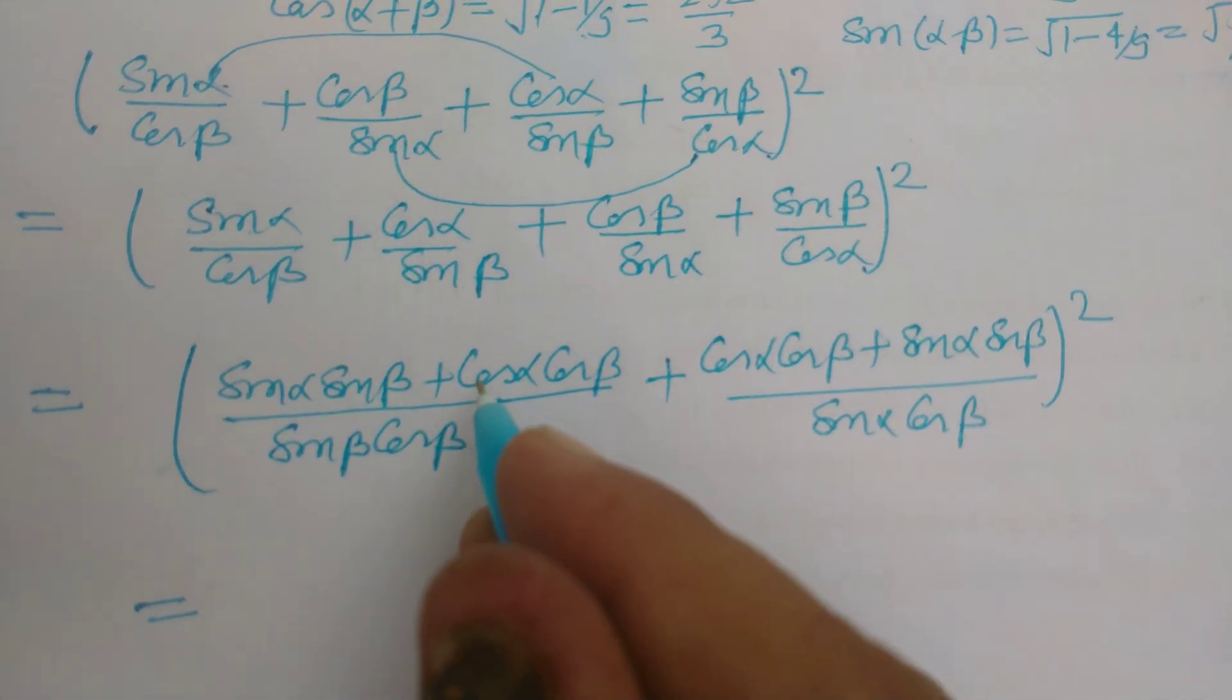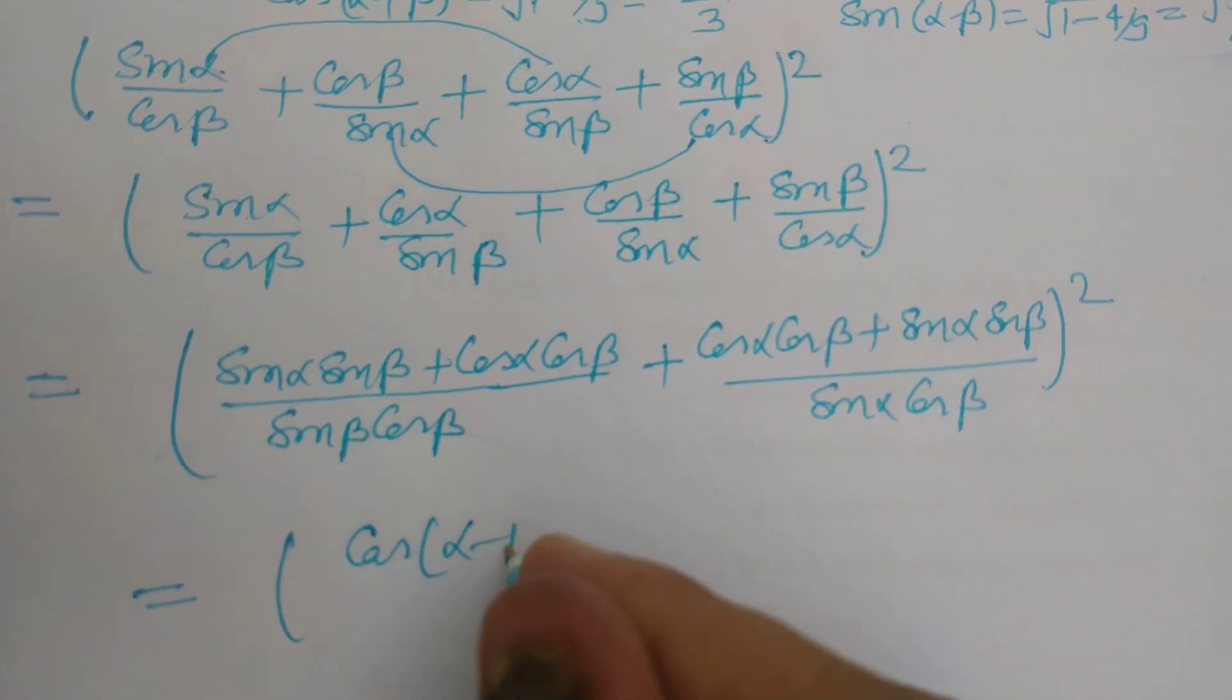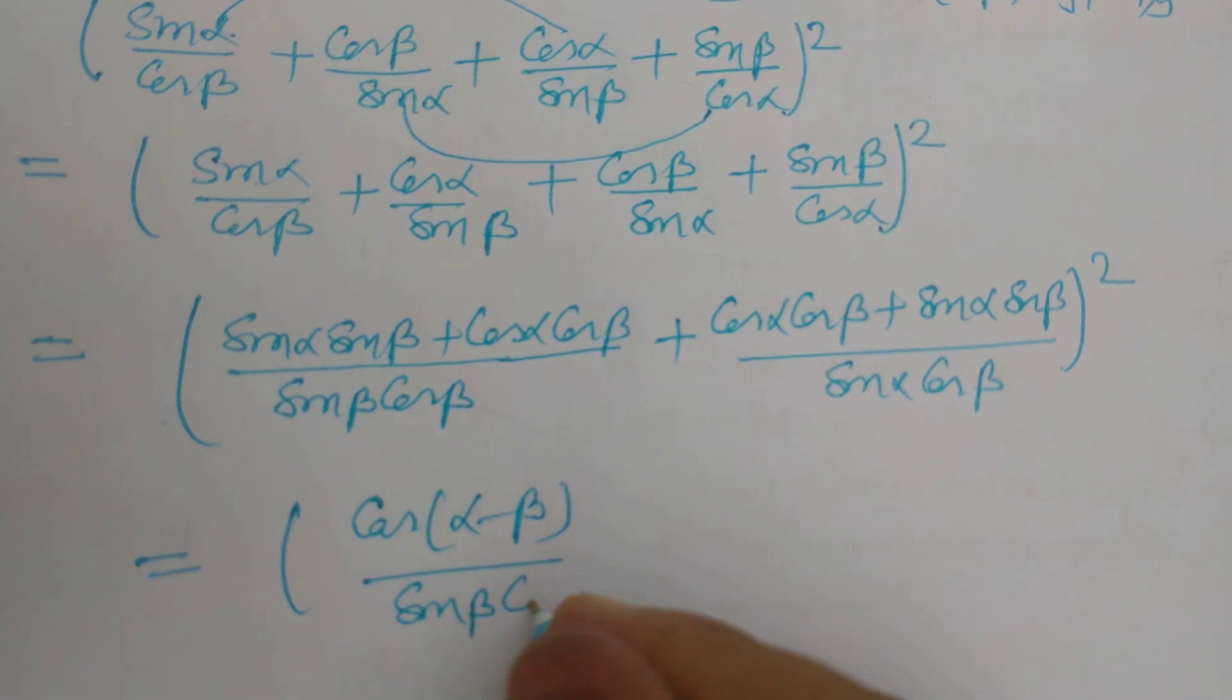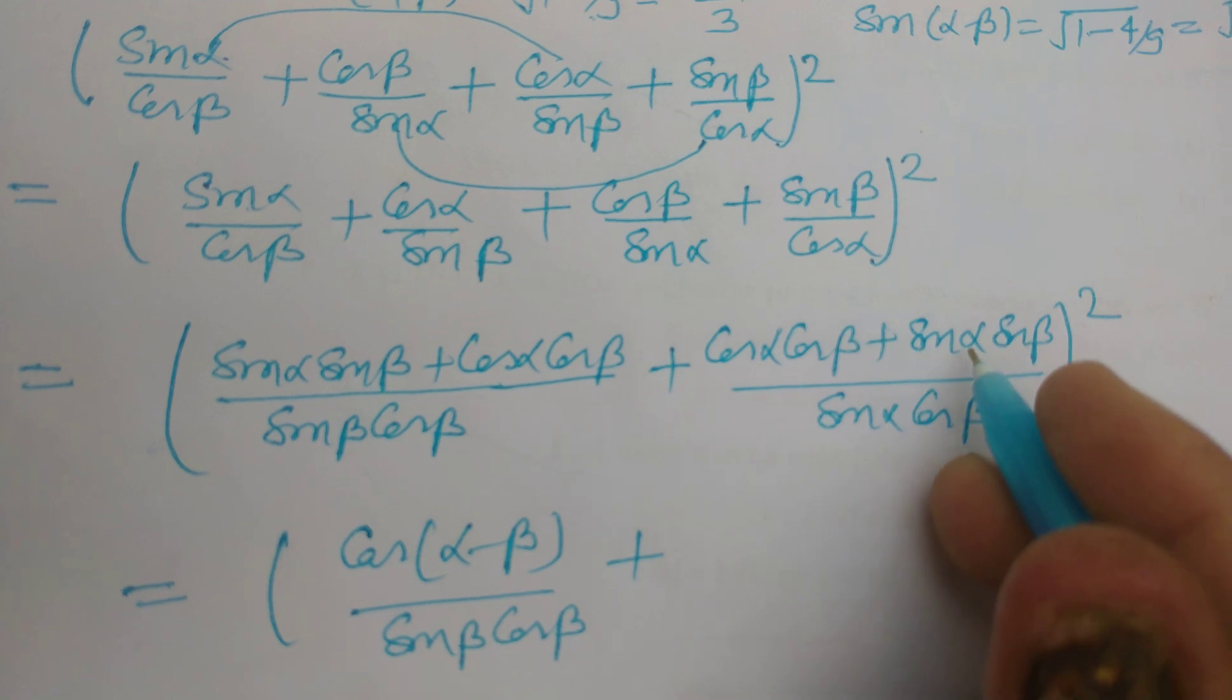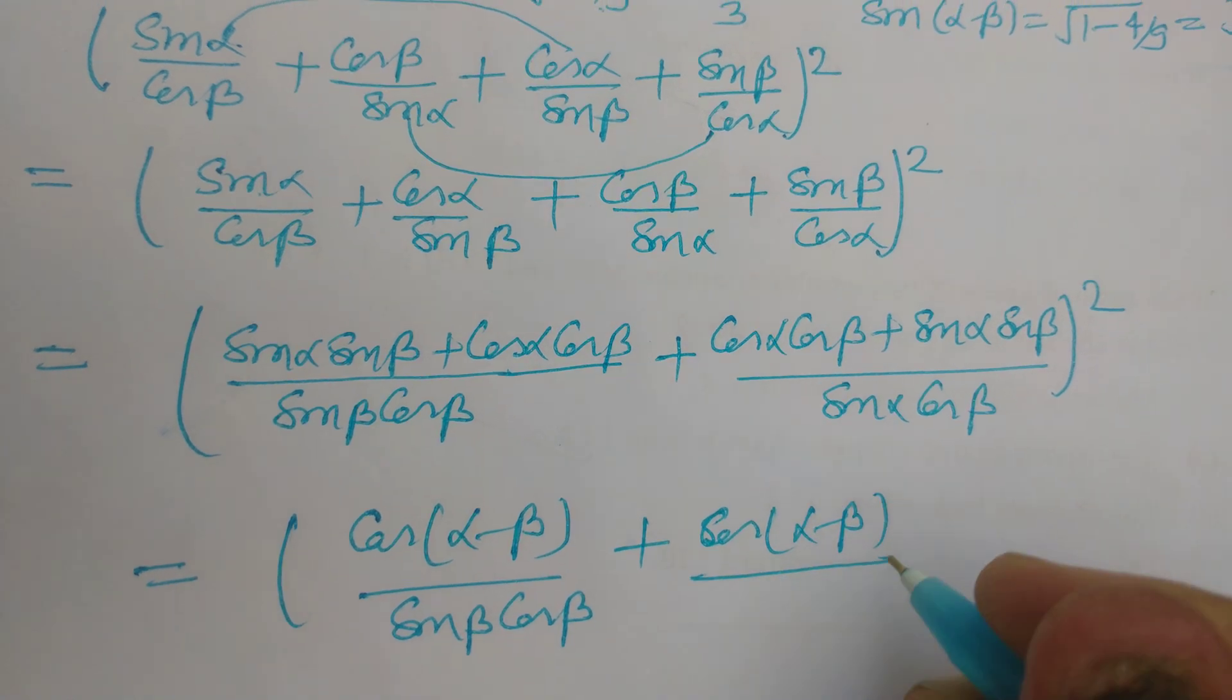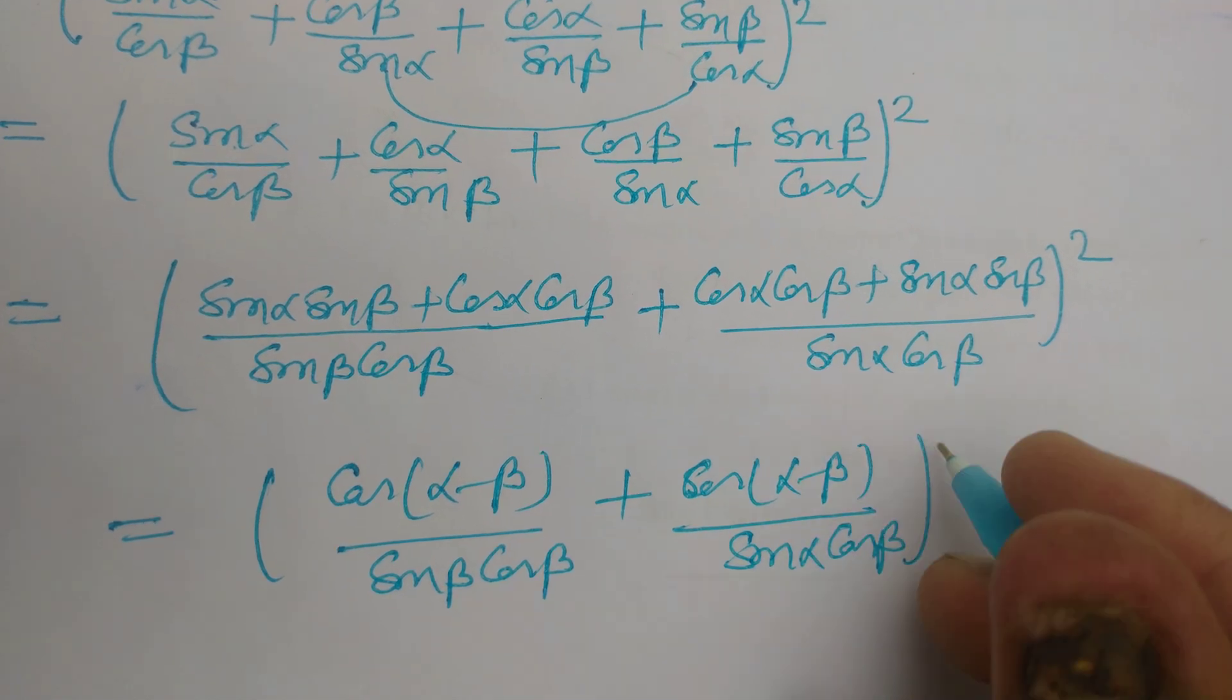This is sin α sin β + cos α cos β, so we got cos(α-β) over sin β cos β, plus similarly sin α sin β + cos α cos β, so this is cos(α-β) over sin α cos β whole squared.